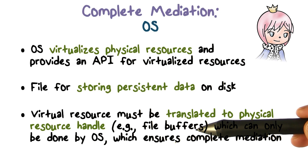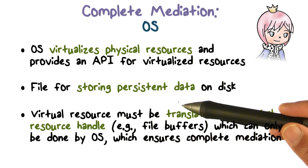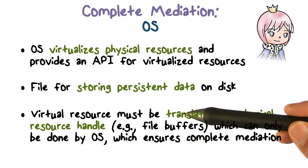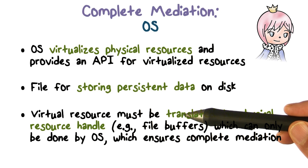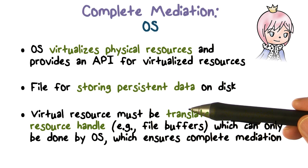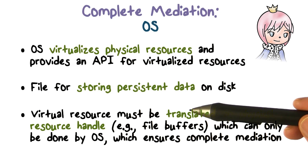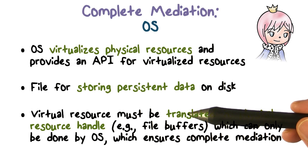If you want to access a disk block or a page of memory, you have to start with either a file descriptor, or a logical address, or a virtual address. The translation from virtual to physical is the first step before you can get to the physical resource. Only the operating system knows how to do that — it has the metadata and the control information that can be used for this translation.